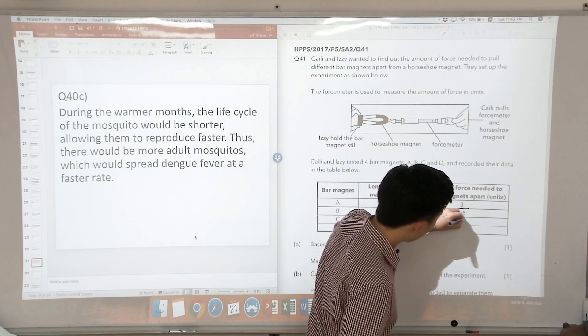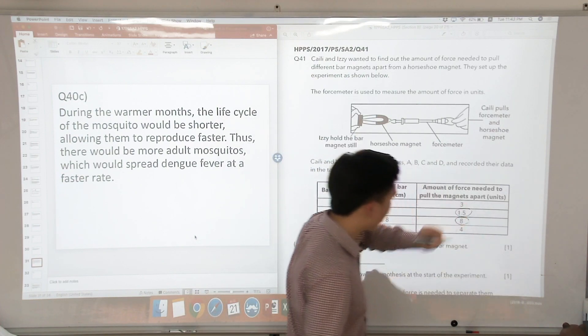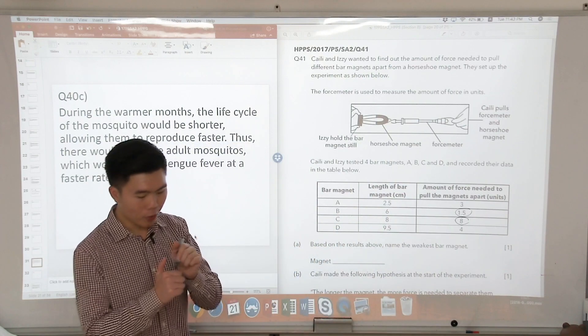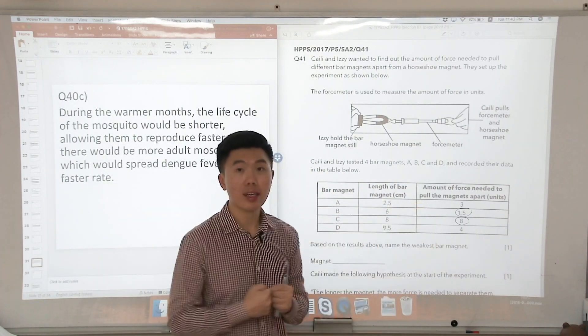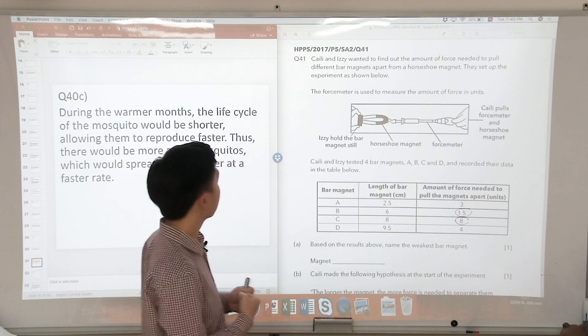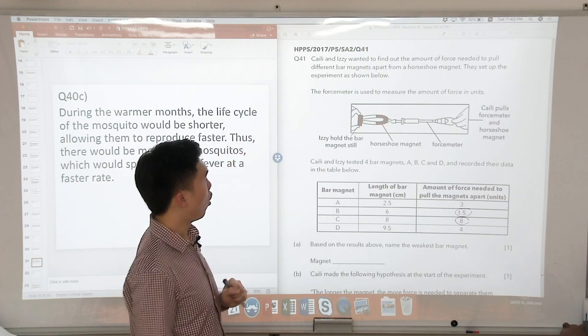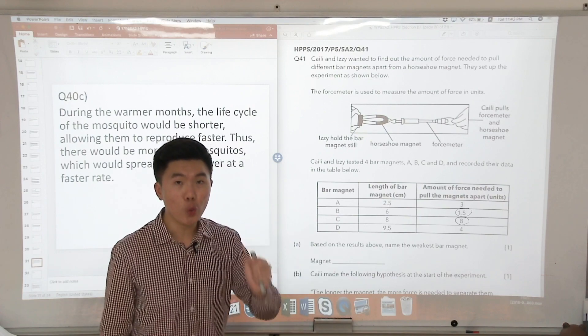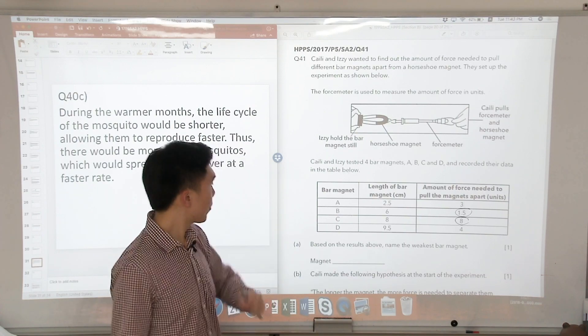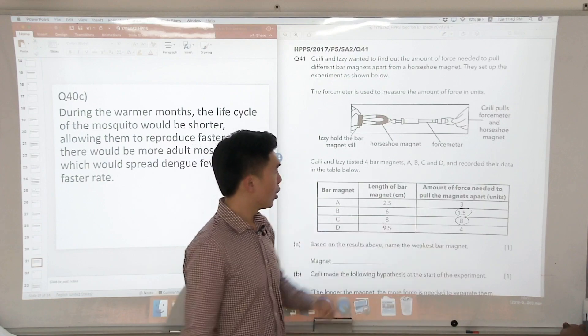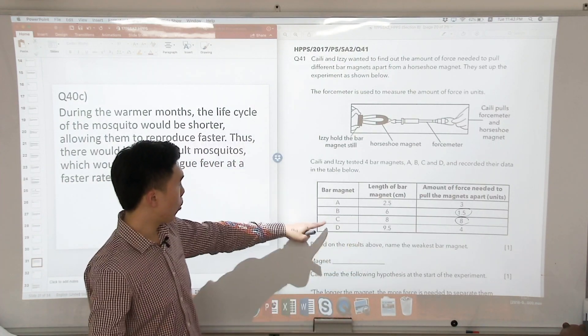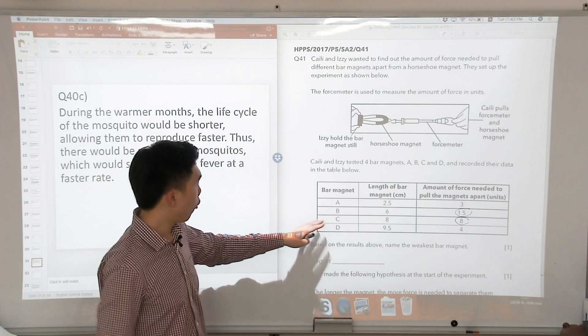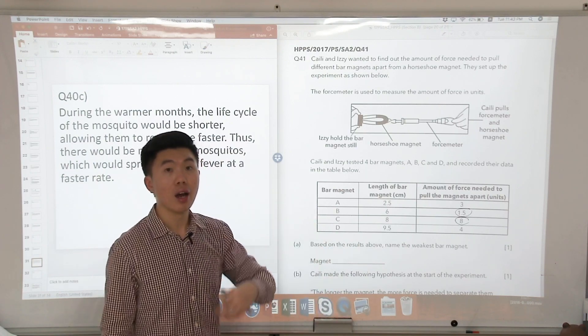I'm always going to look at the one with the smallest and the largest number. So what if the force needed to pull the bar magnets apart is the smallest? This means that the strength of the bar magnet is the weakest. How about C? The amount of force needed to pull the magnets apart was the greatest. That means for bar magnet C, the strength of bar magnet C is the greatest.